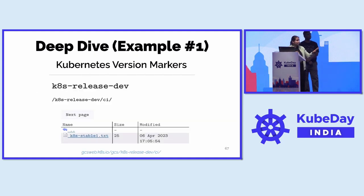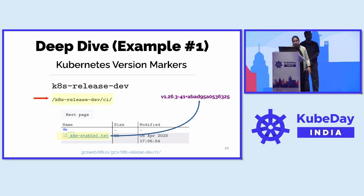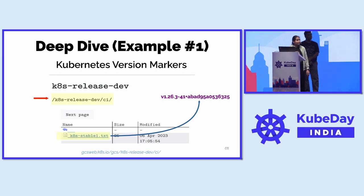Here is an example — a snapshot of the GCS bucket we use for the Kubernetes project, k8s-release-dev. If you see the path k8s-release-dev/ci, inside that there is a file called k8s-stable-1.txt. That's the file we're talking about as a Kubernetes version marker. What that file contains is a big version string — this is an old example looking at a version marker for the 1.26 release.